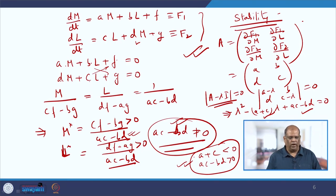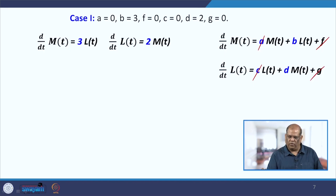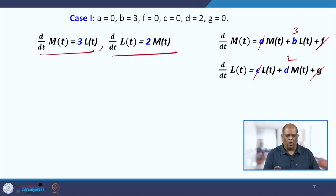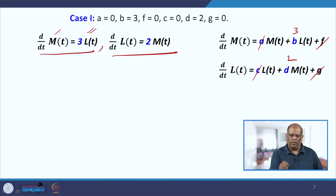Now let us look into various cases. Case 1: we take A = 0, B = 3, C = 0, D = 2, F = 0, G = 0. The differential equations become dM/dt = 3L and dL/dt = 2M. This means the rate of change of Majnu's love depends only on Laila's encouragement, and the rate of change of Laila's love depends only on Majnu's encouragement.